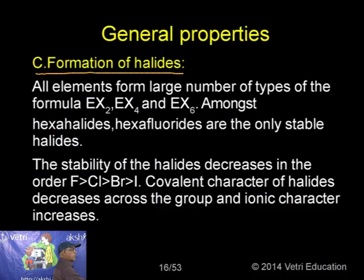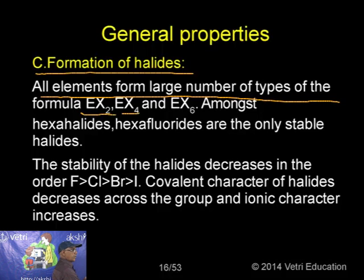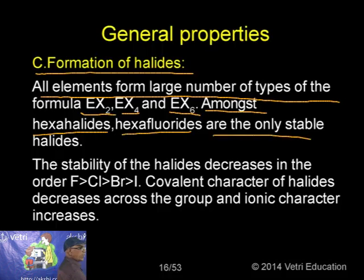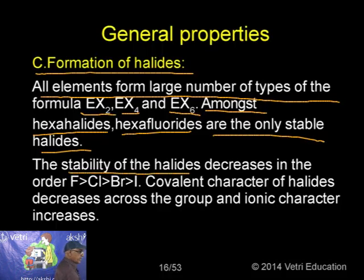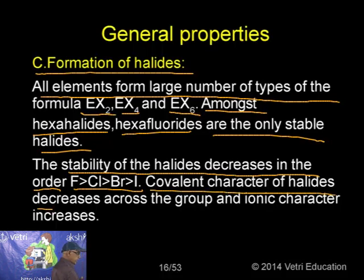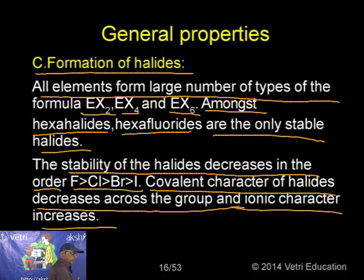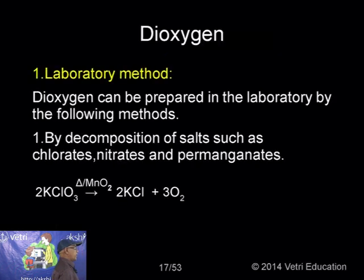For formation of halides, all elements form halides of formula EX₂, EX₄, and EX₆. Among hexahalides, hexafluorides are the only stable ones. The stability of halides decreases in the order F > Cl > Br > I. Covalent character of halides decreases and ionic character increases down the group.